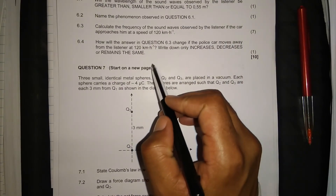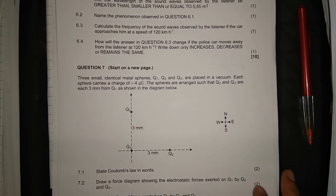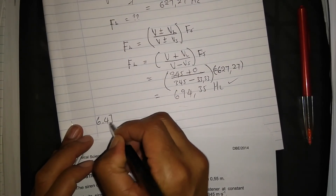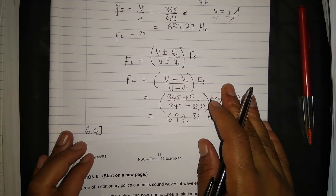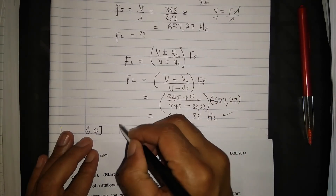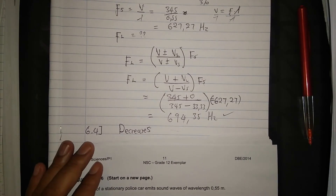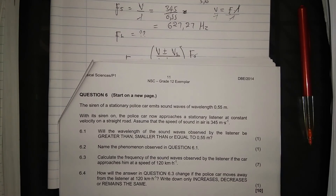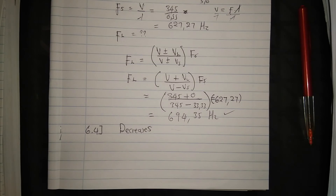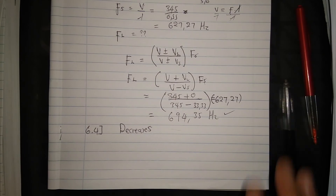Question 6.4: how will the answer in 6.3 change if the police car moves away from the listener at the same speed? Write down only increases, decreases, or remains the same. If the car moves away with the siren on, the frequency decreases. So the answer is: decreases. Thanks for watching - check out the links in the description below and in the following video.